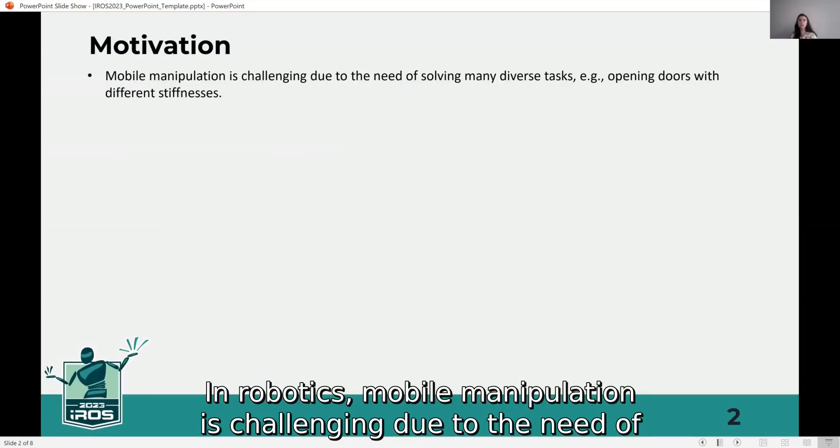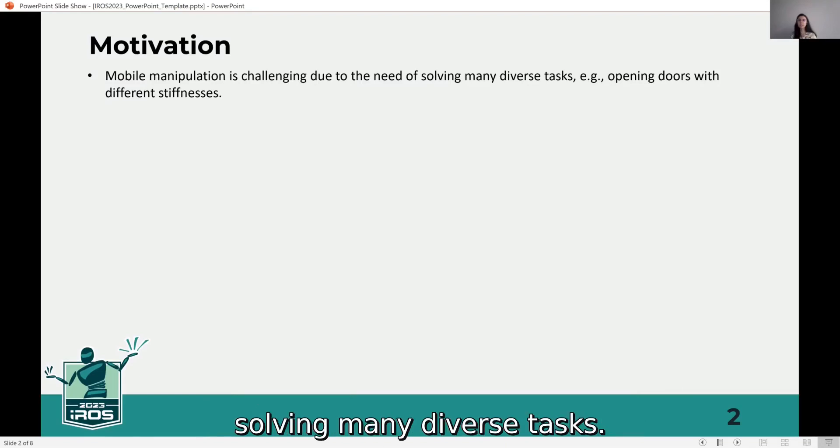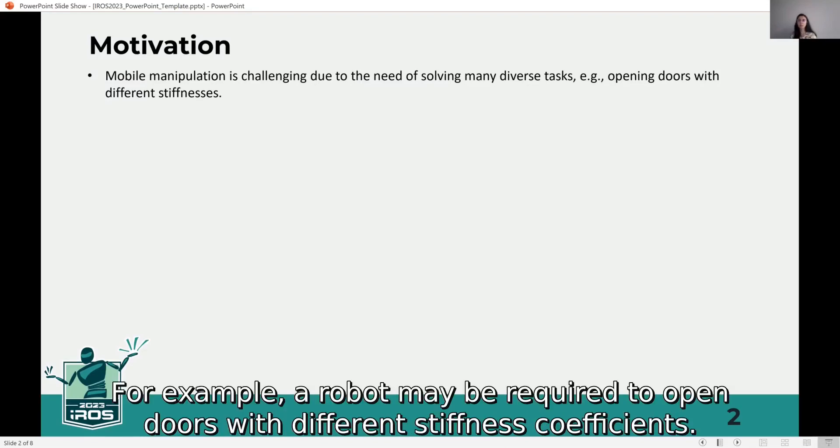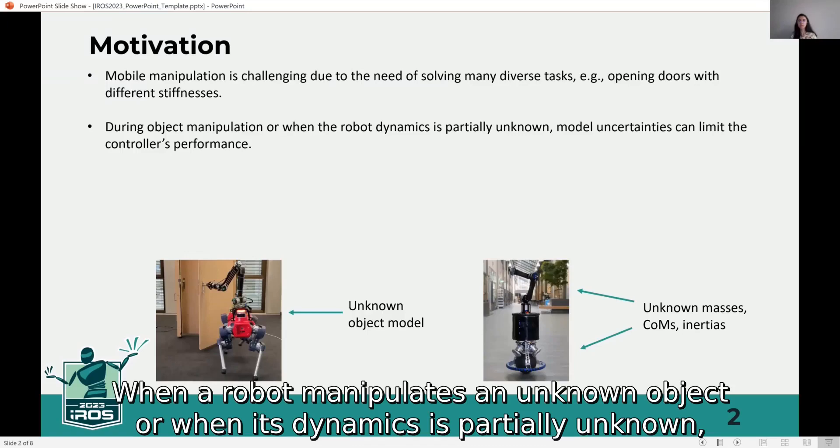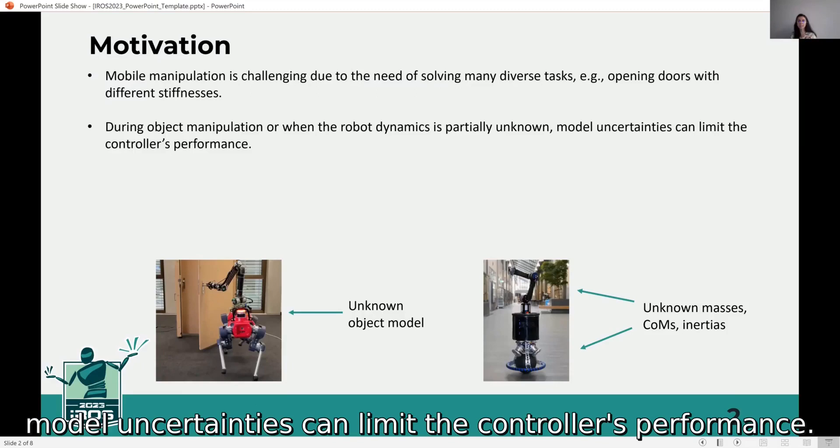In robotics, mobile manipulation is challenging due to the need of solving many diverse tasks. For example, a robot may be required to open doors with different stiffness coefficients. When a robot manipulates an unknown object or when its dynamics is partially unknown, model uncertainties can limit the controller's performance.